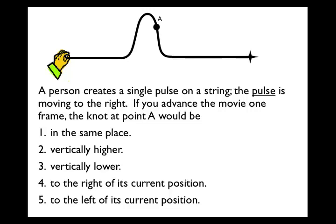For those continuing on, here's a question. A person creates a single pulse on a string, and the pulse is moving to the right. If you advance the movie one frame, the knot at point A would be what? In the same place, vertically higher, vertically lower, to the right of its current position, or to the left of its current position? I would encourage you to pause the lecture, see if you can predict the answer, and then restart it to see what my response is.